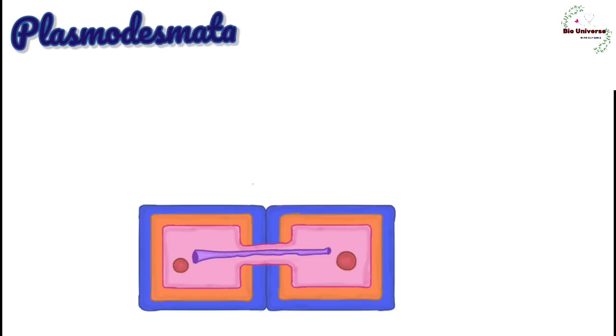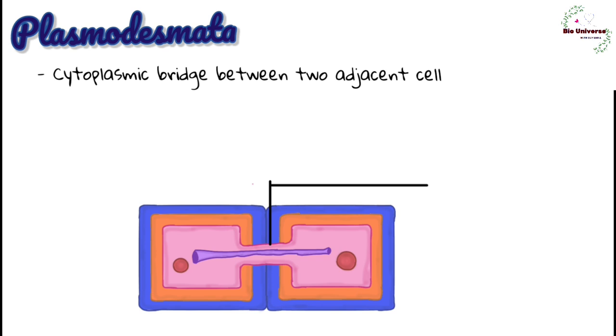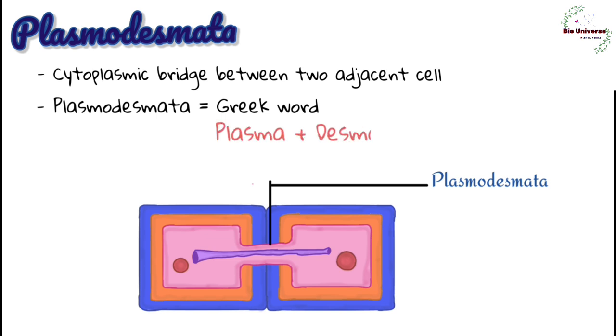Plasmodesmata. They are cytoplasmic or protoplasmic bridges between two adjacent plant cells. The word plasmodesmata is derived from Greek word plasma and desma, plasma meaning form and desma meaning bond. A plasmodesma consists of a fine pore or canal of 20 to 40 nanometer in diameter in the cell walls and middle lamella of two adjacent cells which is lined by plasma membrane and often contains a fine simple or branched tubule called desmotubule. Desmotubule connects the endoplasmic reticulum of two cells. The space between desmotubule and plasmolemma lining the plasmodesmata contains 8 to 10 microchannels which allow movement of only small-sized particles.